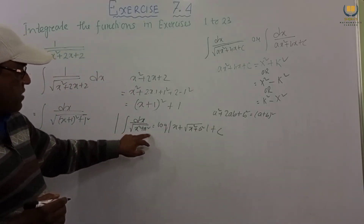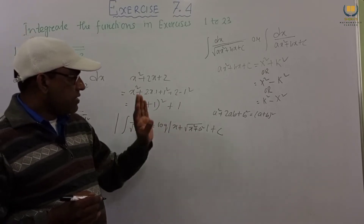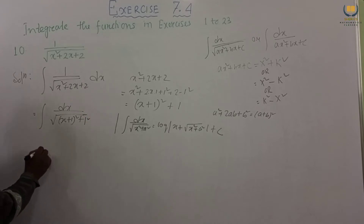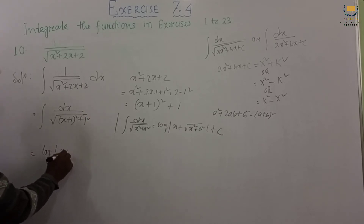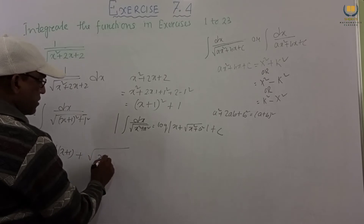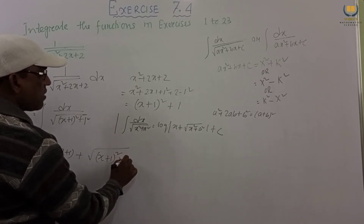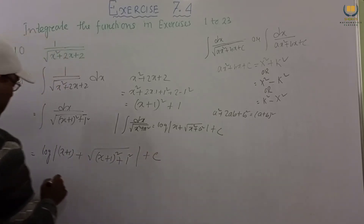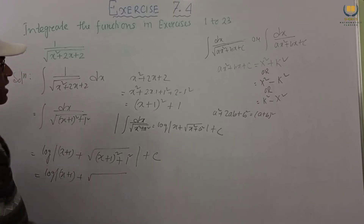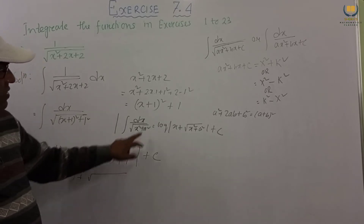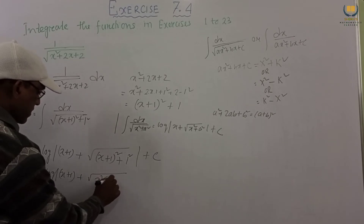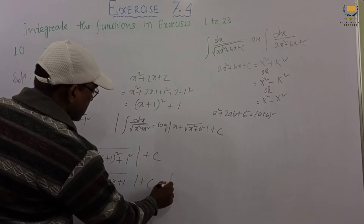So if we get root over x square plus a square, we consider this whole as x. Here x plus 1 is our x and a is 1. So this will be log base e of x plus 1 plus root over x plus 1 whole square plus 1 square plus c. Expanding, this is log of x plus 1 plus root over x square plus 2x plus 1 plus 1, giving us root over x square plus 2x plus 2 plus c. This is our final answer.